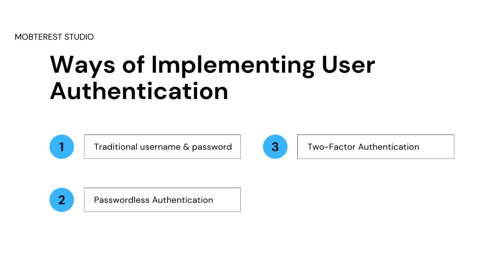Next, we have two-factor authentication, or 2FA. This is where an extra layer of security is added — hence the term 'two factor' — in addition to the traditional username and password. Users are required to provide a second factor, typically something they possess, such as a unique code generated by a mobile app or received via SMS.